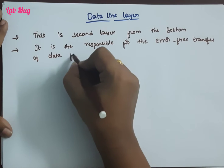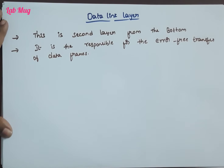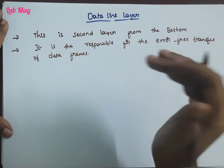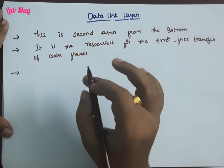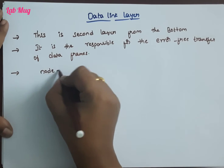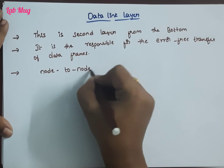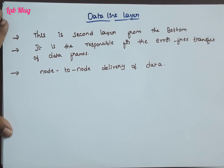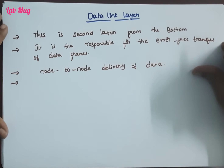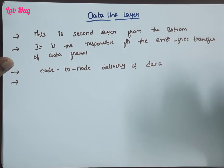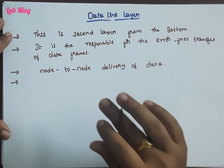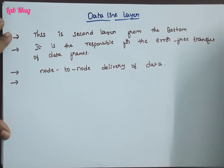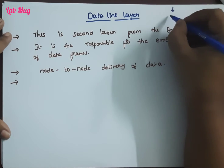The main responsibility of the data link layer is the handling of data frames. Each and every data has a frame format. The frame is the name for node-to-node delivery of data, and it is responsible for error-free, node-to-node and part-to-part delivery. Each and every layer is responsible for its own set of works, and the data link layer is responsible for each layer of data.